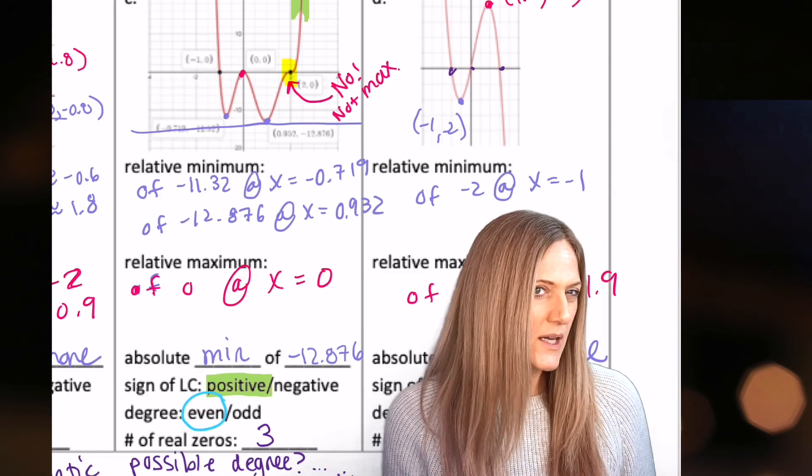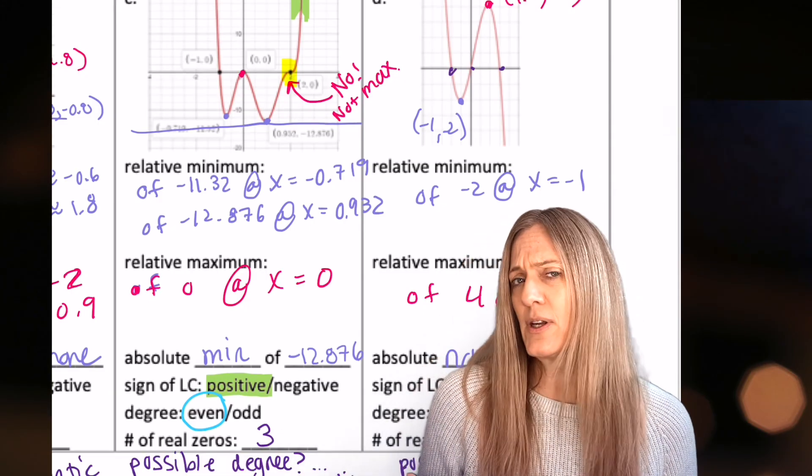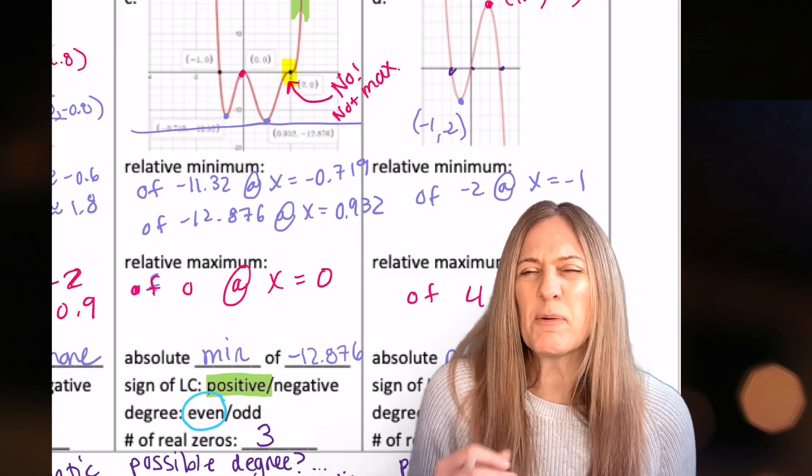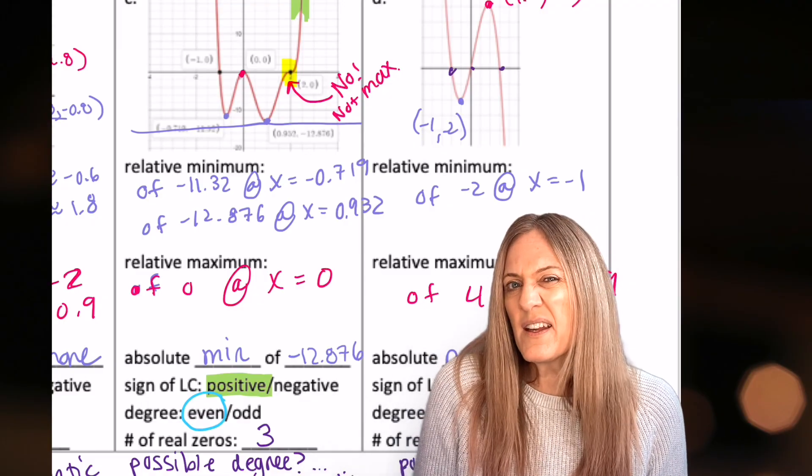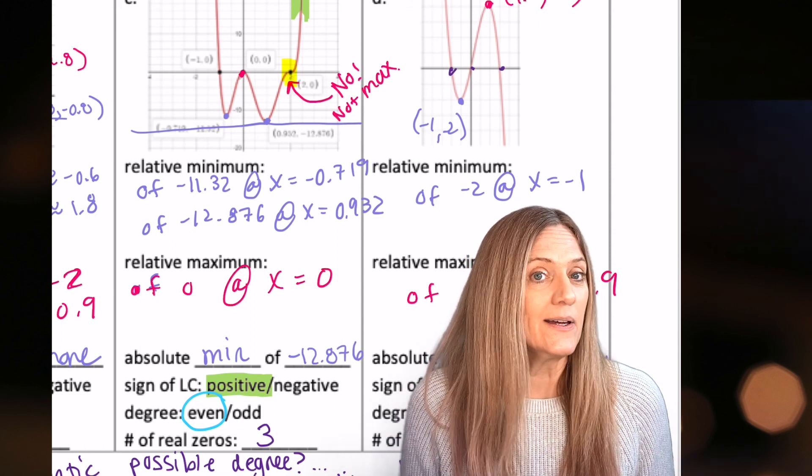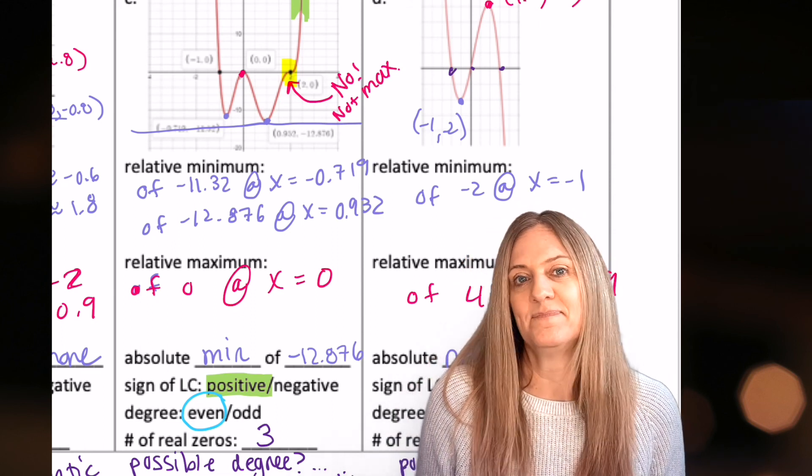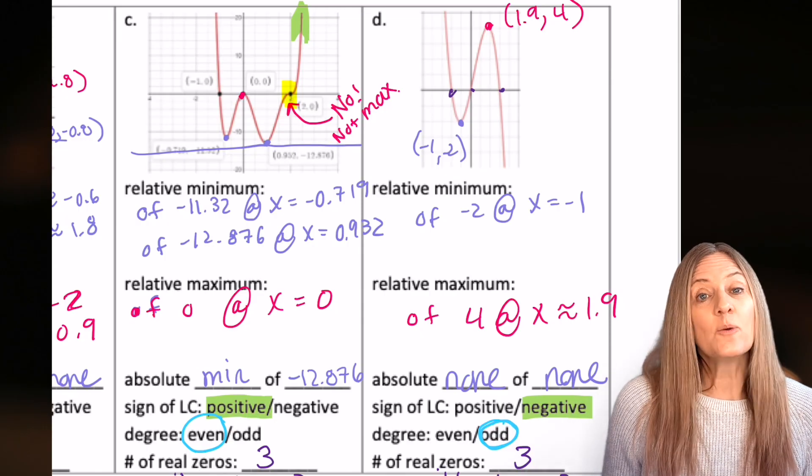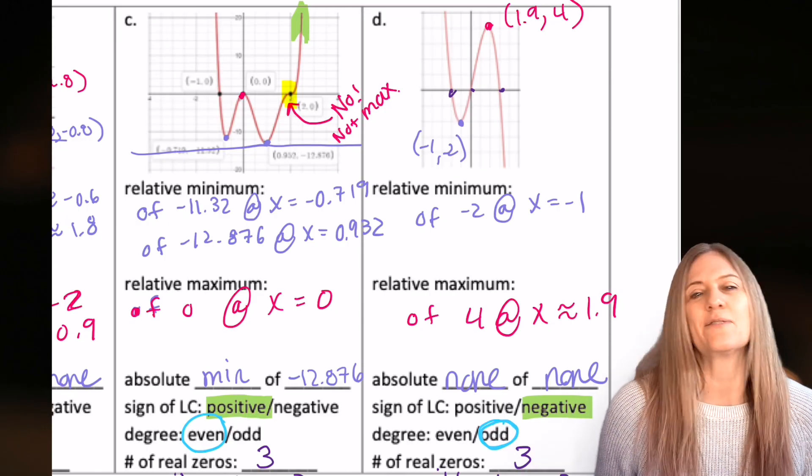What possible degree could this be? Based off of turning points, it would be at least a quartic. But remember we have that weird little squiggle in there? I have a feeling it's more than a quartic. It would have to be even, so it might be a sixth degree. Check your answers on D. And don't worry if you approximate it slightly different than we did.